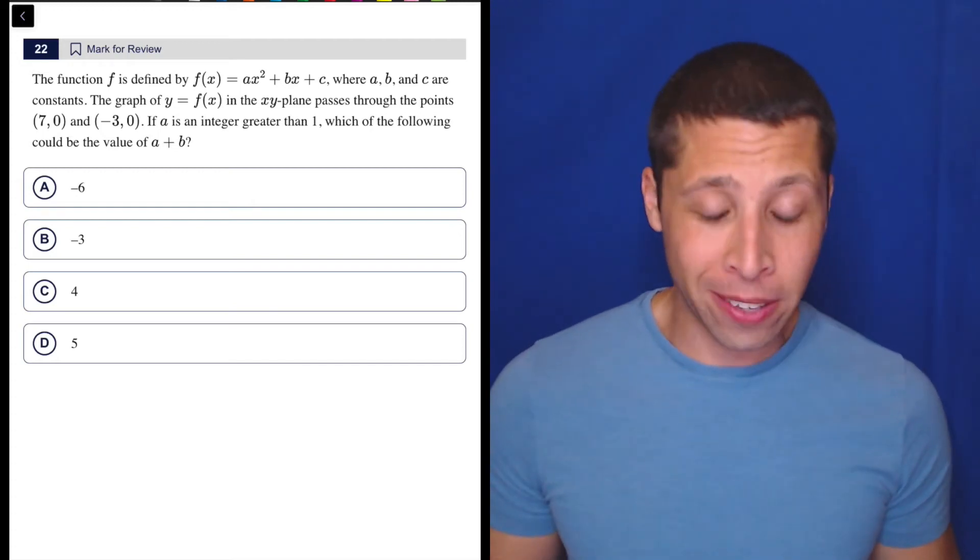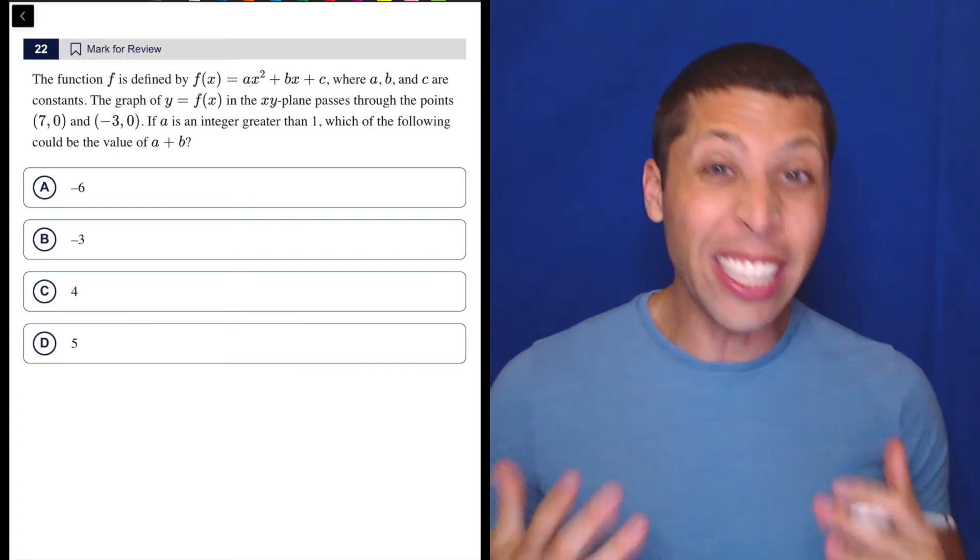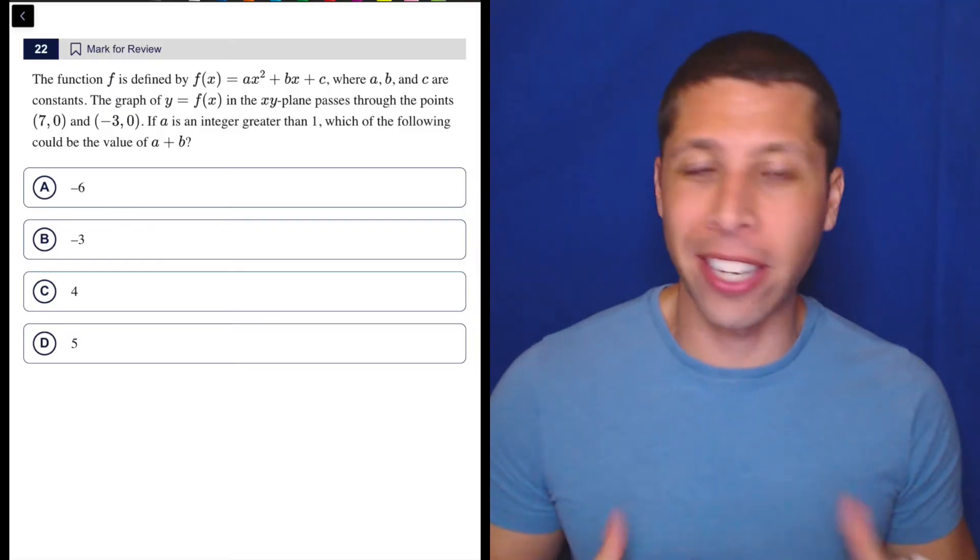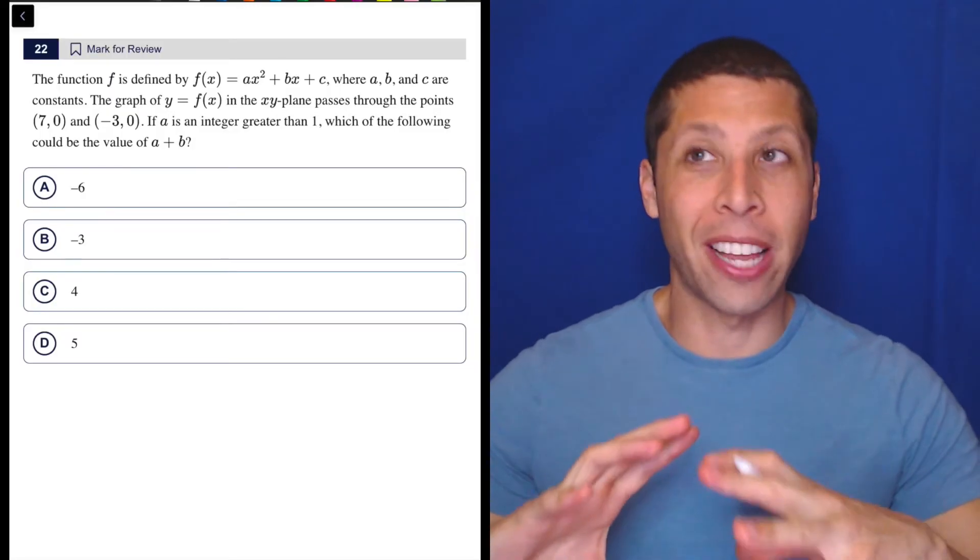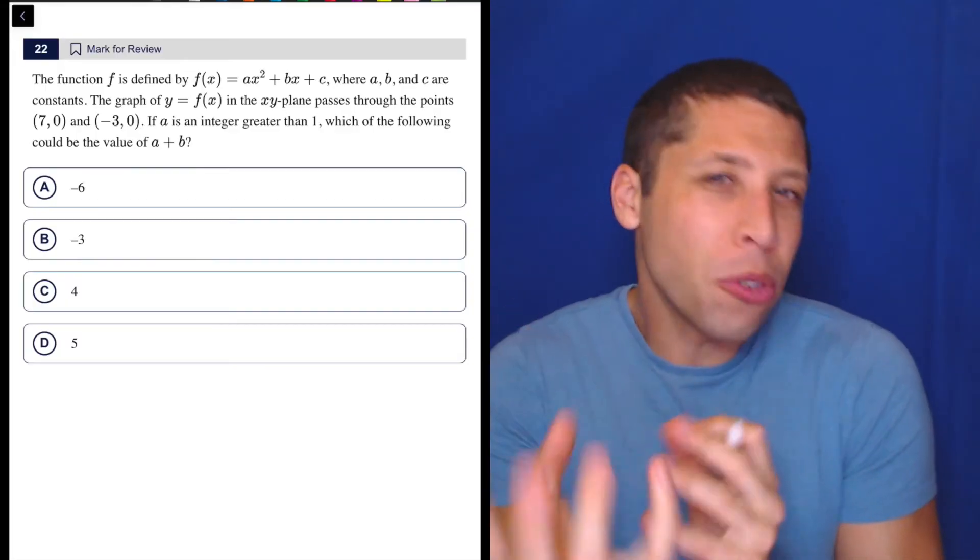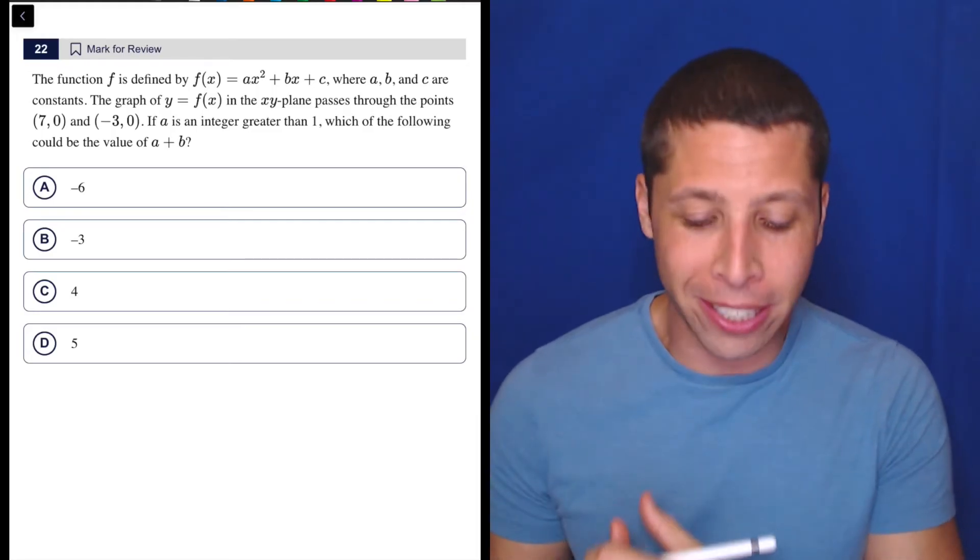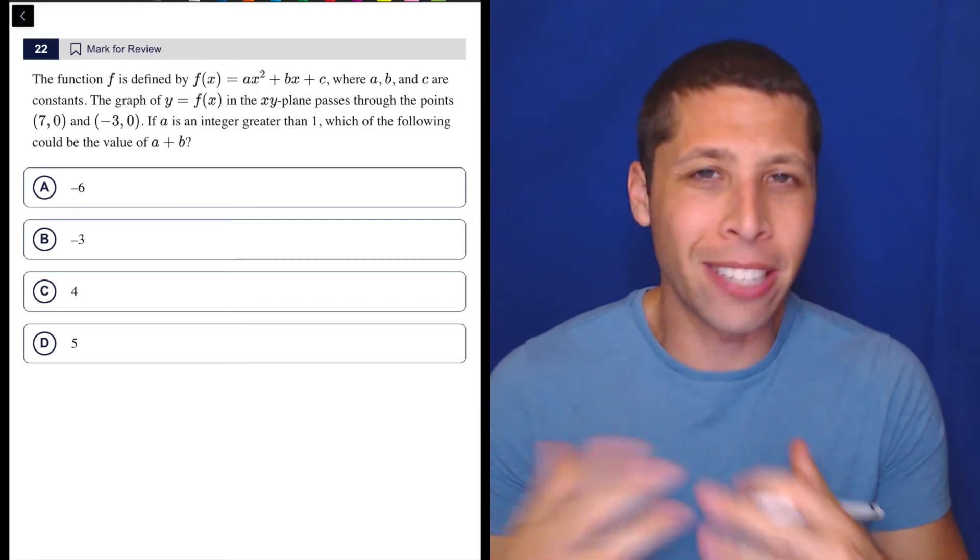All right, so this is definitely a hard question, but we know that the SAT really likes this style of question all of a sudden. Pretty much every practice test, every SAT seems to have one of these quadratics where they're kind of giving you some conditions, but they're doing it in code and you've got to untangle this thing using a bunch of formulas or plug some points in. It's just a mess.